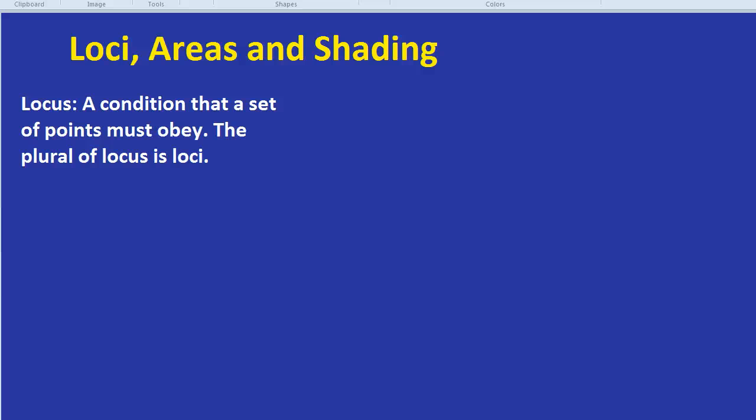In this video, we're going to be dealing with loci questions. If you're not familiar with the word loci, it is basically the plural of locus. A locus is a condition that a set of points must obey. For example, if you draw all the points which are two centimetres away from a wall on a diagram, all those points would form a locus because they all obey a certain rule. If we have more than one locus, we have loci.